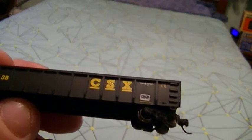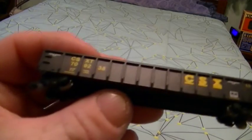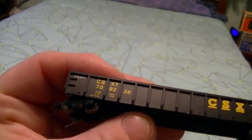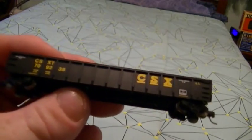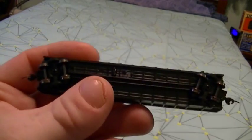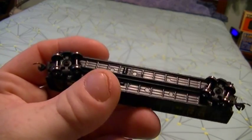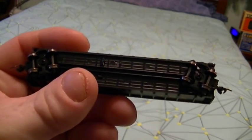Okay, here it is out of the box. Pretty crisp painting. There's the underneath of it, the detail. It does have metal wheels on it.